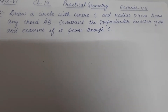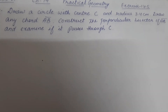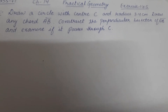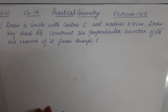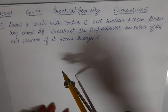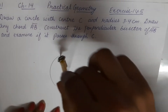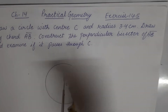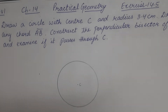First of all, we will draw a circle of radius 3.4 centimeters with center C. This is the center of the circle. With C as center and radius 3.4 centimeters, draw the circle.